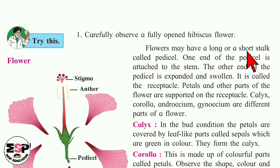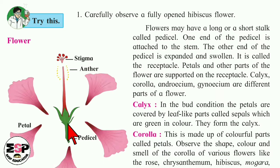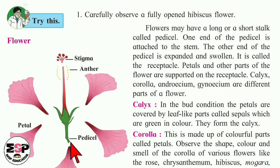Flowers may have a long or short stalk called the pedicel. One end of the pedicel is attached to the stem, and the other end is expanded and swollen. In some flowers it is long and in some it is short. The swollen expanded end is called the receptacle. Petals and other parts of the flower are supported on the receptacle.